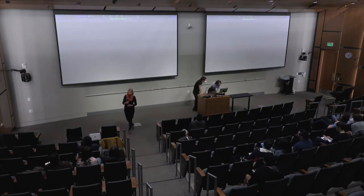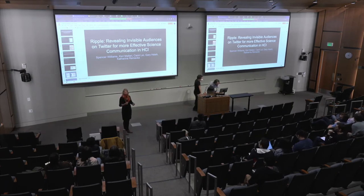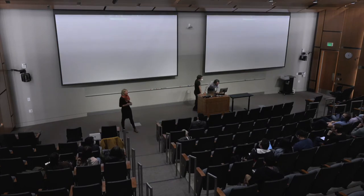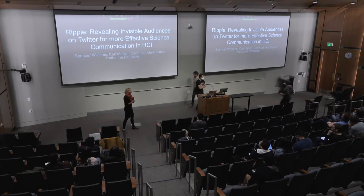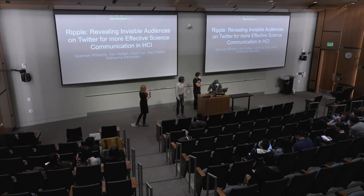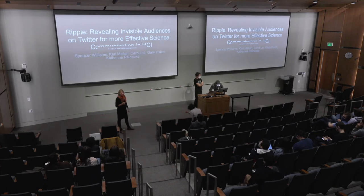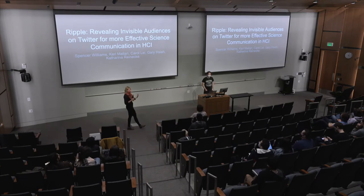Spencer has been doing a lot of work on scientific communication from the side of how we enable researchers to actually communicate better. He's focused on HCI for a long time, and right now we're focusing on trying to provide researchers with ways to communicate scientific information about the COVID vaccine — funded by the vaccine confidence grant. I'll let him talk about his tool Ripple, which addresses communicating scientific information to people out there.